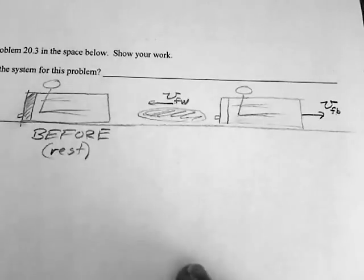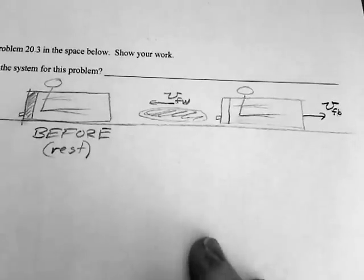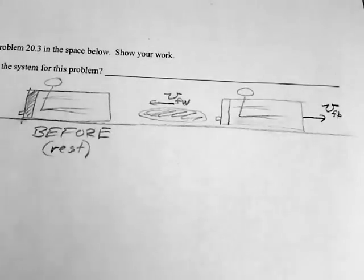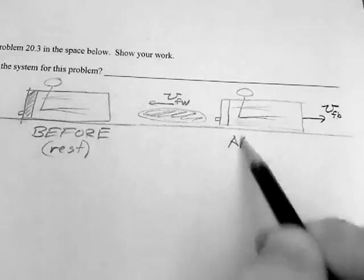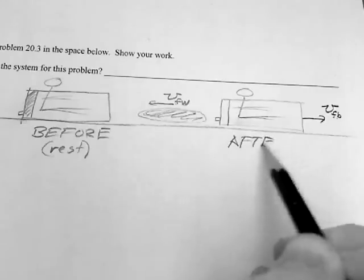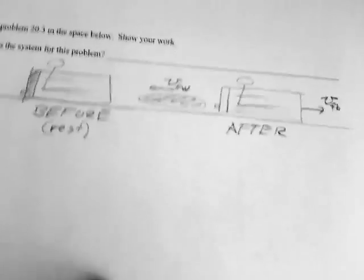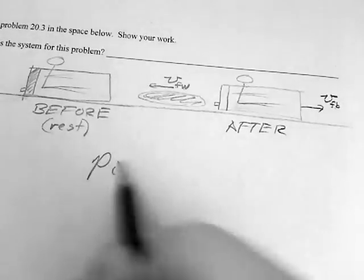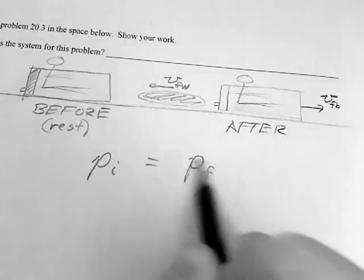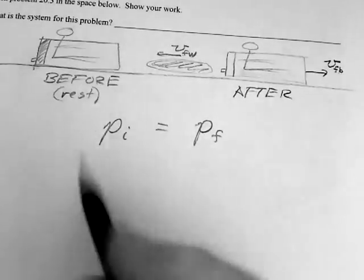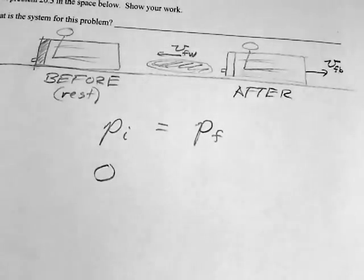You can use conservation of linear momentum because there are no external forces if you consider the system to be the three objects that I mentioned earlier. This is after all the water squirted out the back. Conservation of momentum means that the initial momentum is equal to the final momentum. Initially, everything is at rest, so the mv for that is just zero.